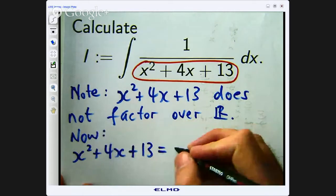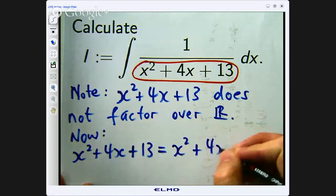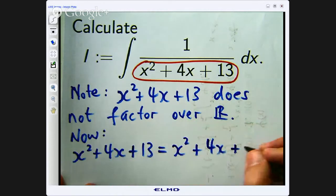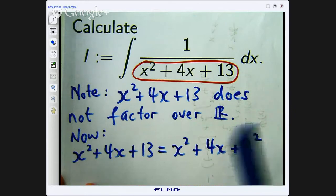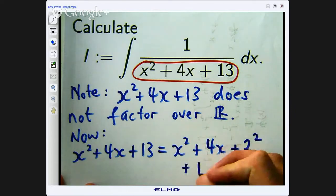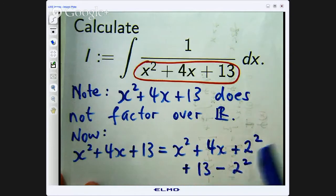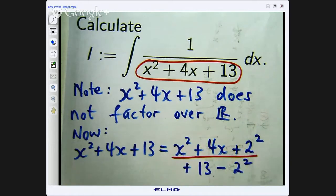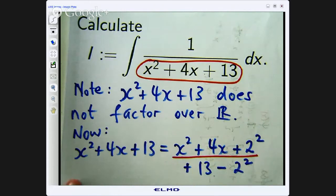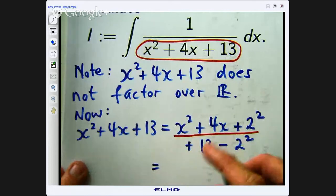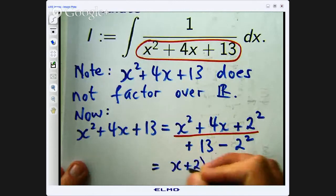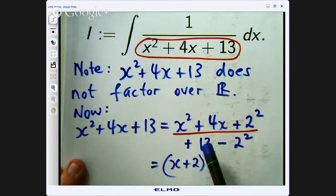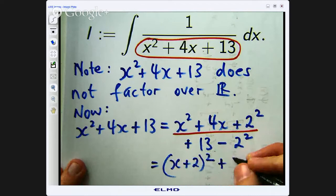Alright so let us take half that coefficient, so it is 2. I am going to square it and add it and then I am going to take the same thing away. So nothing has really changed here. I have just put in a 2 squared and taken away a 2 squared. Now the nice thing about the way I have written it is that this now can be factored to (x plus 2) all squared and this can be simplified.